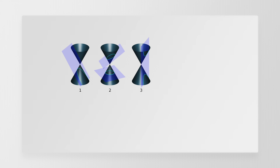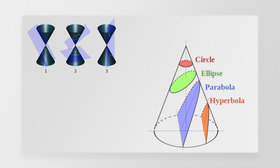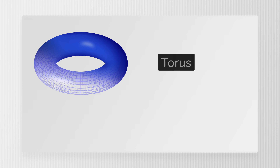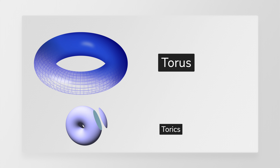I remember first learning about torics back in high school mathematics when I learned about conics. We can take a 3D model of a cone, cut it into multiple slices and get different shapes, such as a sphere, an ellipse, a parabola, and even a hyperbola — hence the name conics. Well, we can apply this exact same concept but with a torus and create a family of torics.